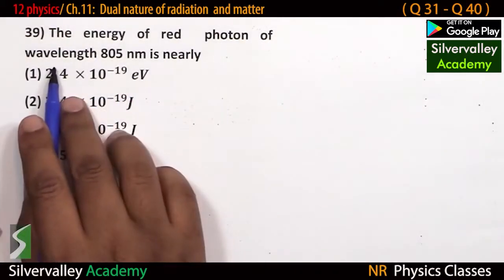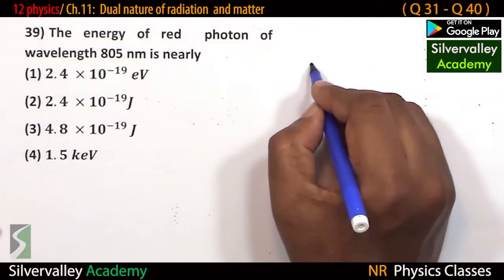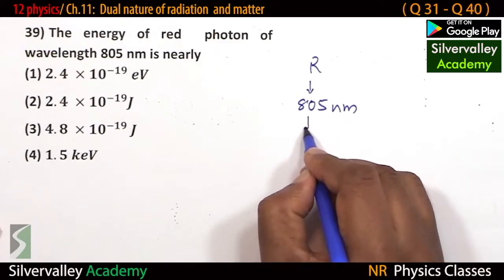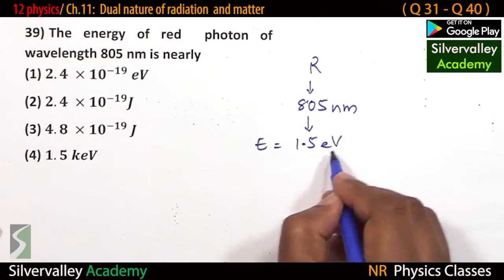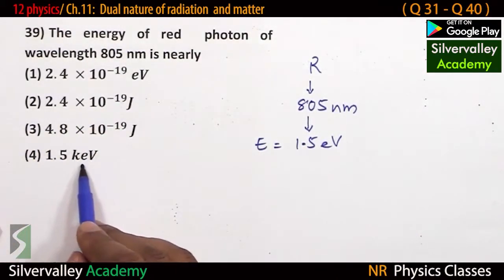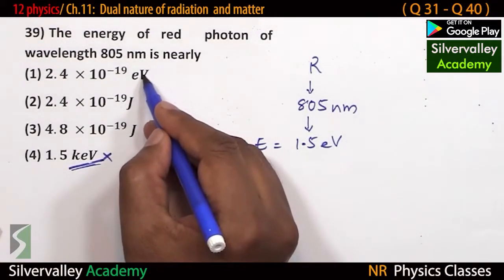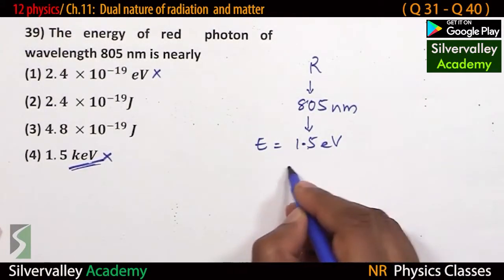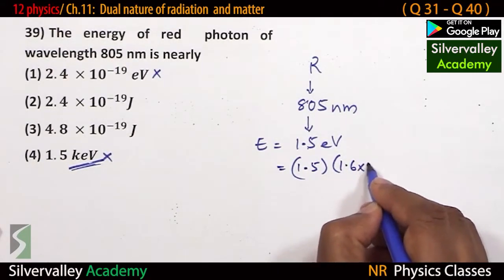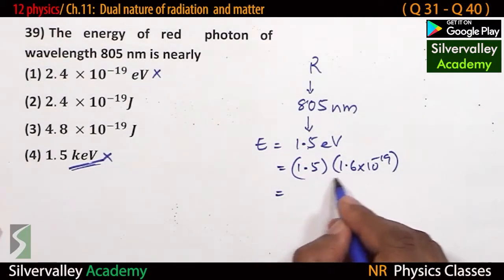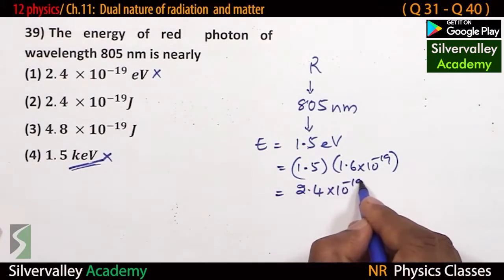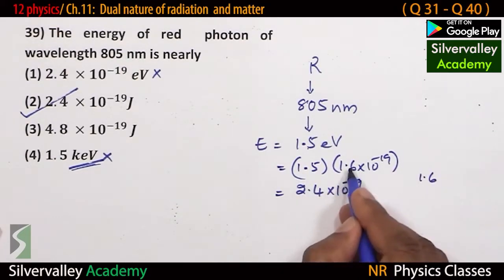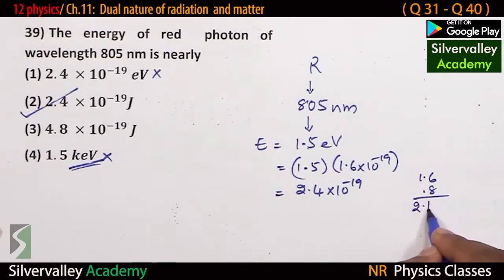Energy of red photon of wavelength 805 nanometer is nearly: red wavelength is about 800 nanometer with corresponding energy about 1.5 eV. In joules, 1.5 eV equals 1.5 times 1.6 times 10 to the power of minus 19, which gives 2.4 times 10 to the power of minus 19 joules.